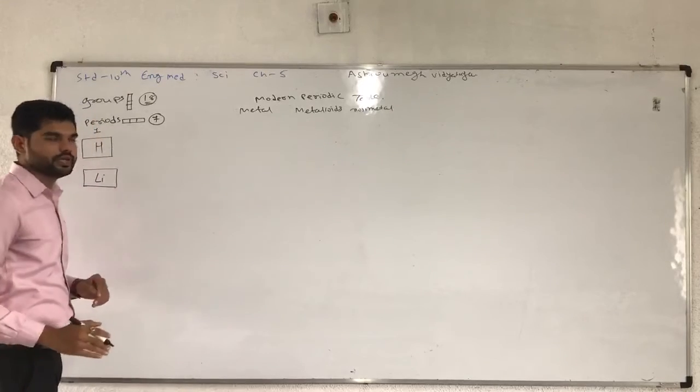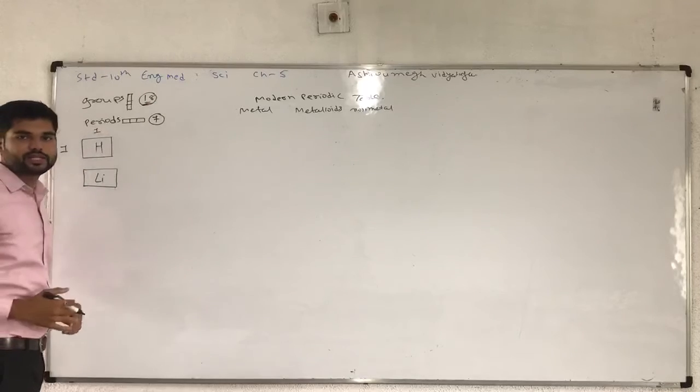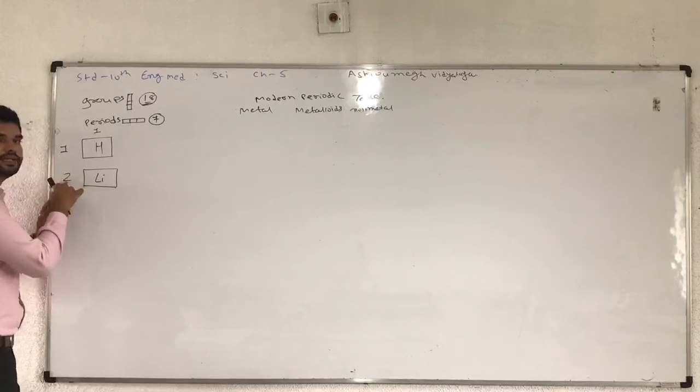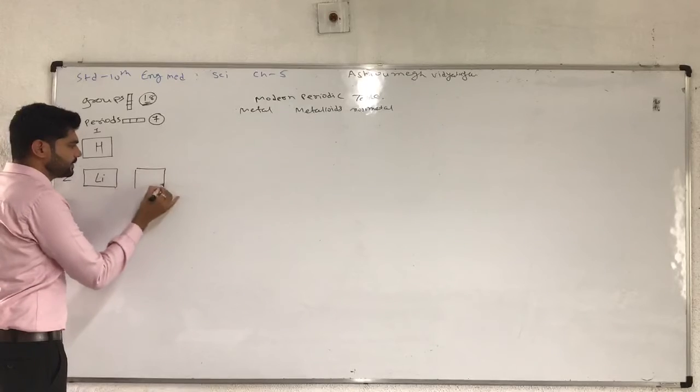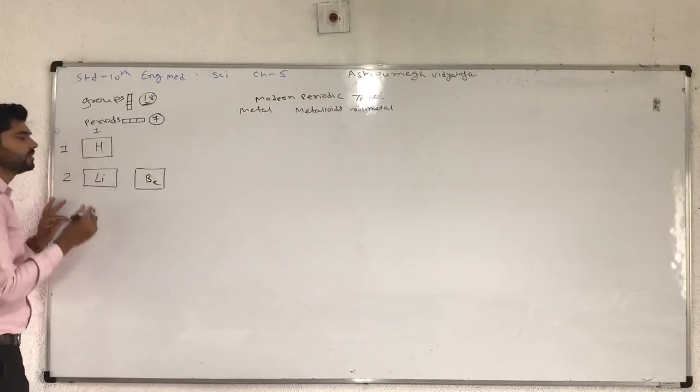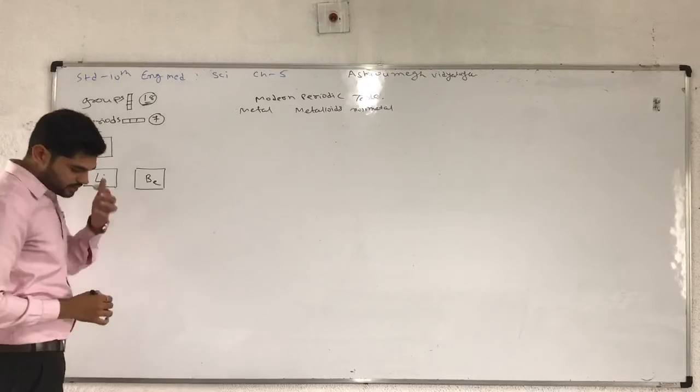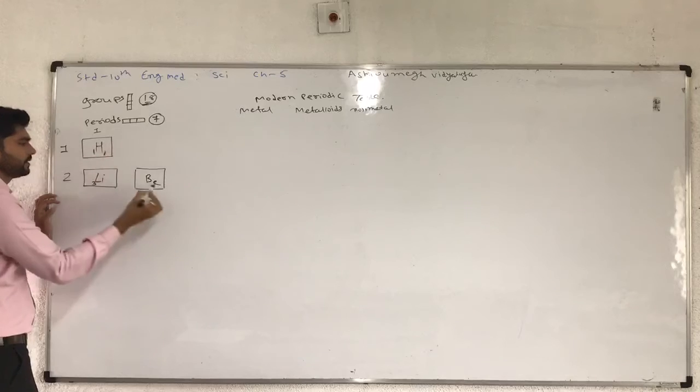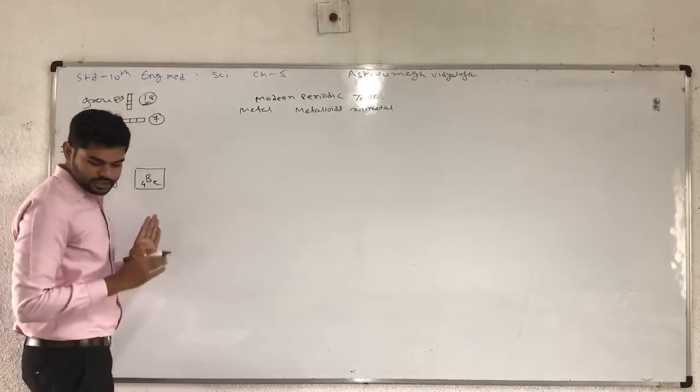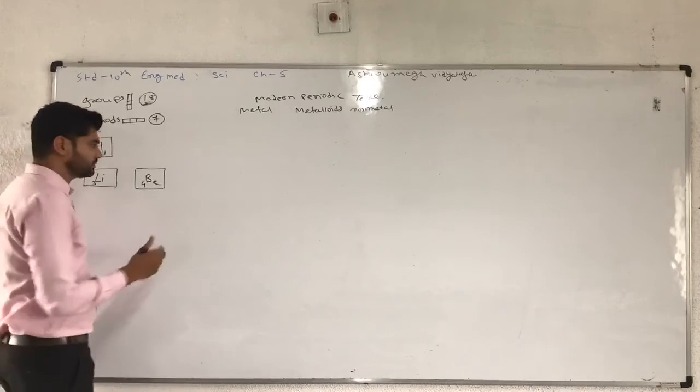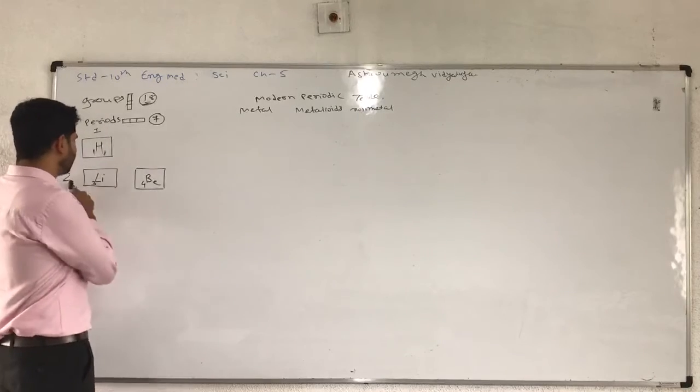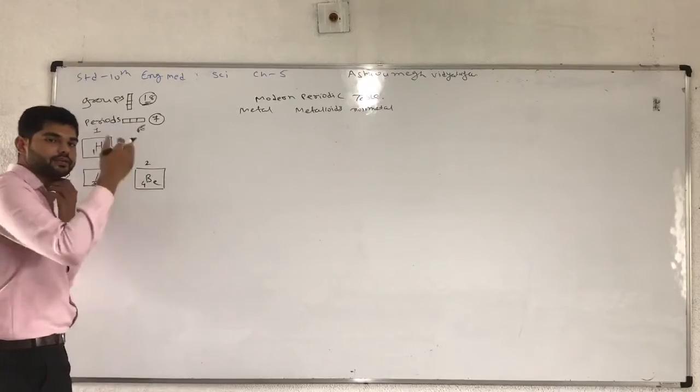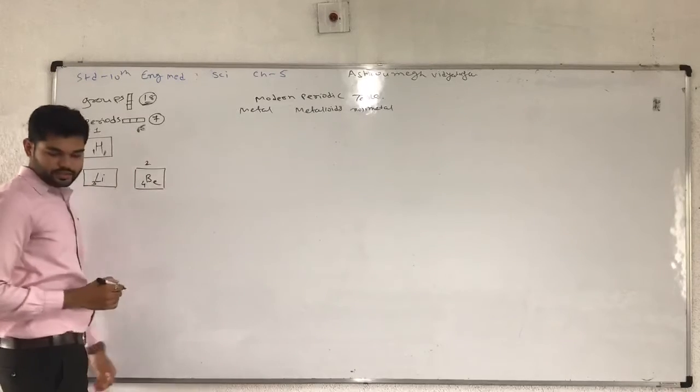In modern periodic table, noble gases are in the last column, which is group 18. Third atomic number is lithium in the second period, first group. After lithium, fourth atomic number is beryllium. Hydrogen has atomic number 1, helium 2, lithium 3, beryllium 4. Now groups can be empty. It means groups 3 through 12 are missing here. First group, then second group with beryllium.